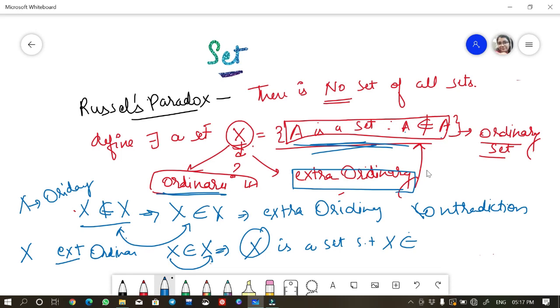So from extraordinary set, you got ordinary set. And that is why this Russell paradox is saying there does not exist any set of all sets because you considered one set and you got contradiction itself.